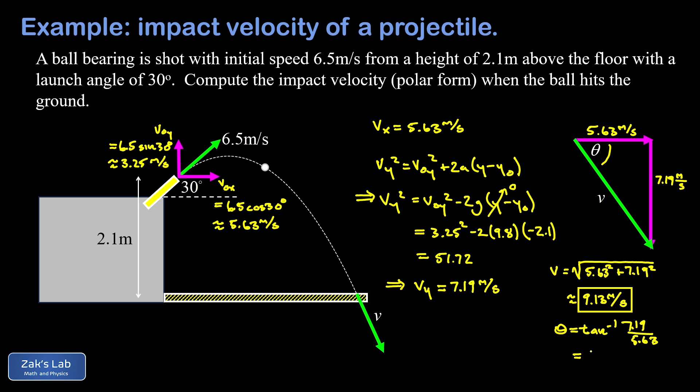There it is, the impact velocity in polar form, meaning we have a magnitude that's 9.13 meters per second and we have a direction that we'll call 51.9 degrees below the horizontal.